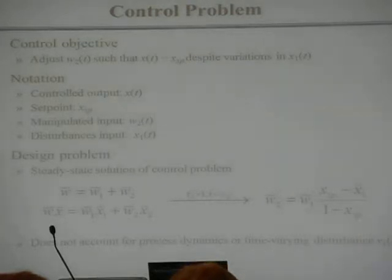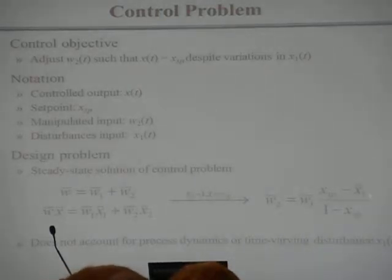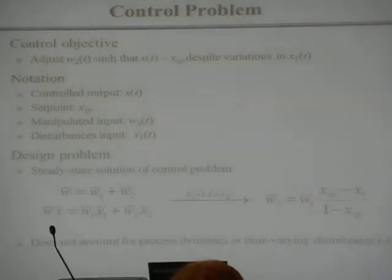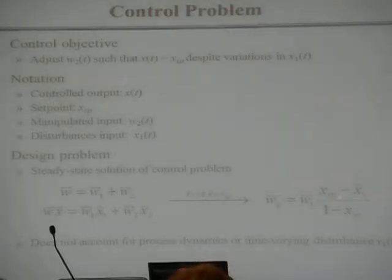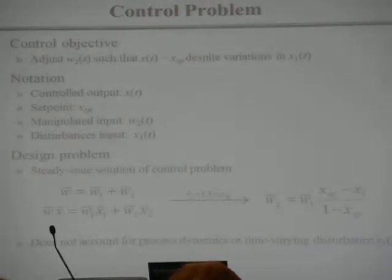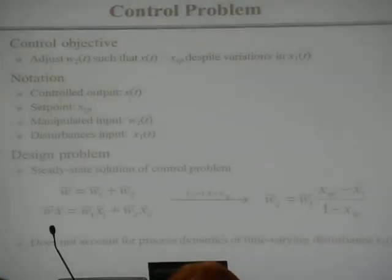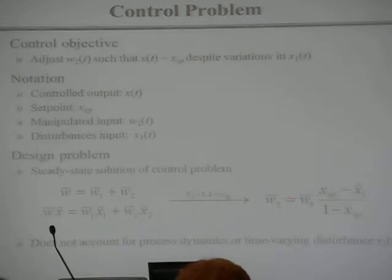So let's say I aspire to accomplish this objective with these two equations. I'm going to combine them, specify x2 equals 1 (since that's pure A), and set x-bar to the set point. Then I eliminate W and rework the equation through algebraic manipulation. This gives a design equation that says: if x1 is a particular steady-state value and I want x to be the set point, then this is the flow rate W2 that will accomplish it.